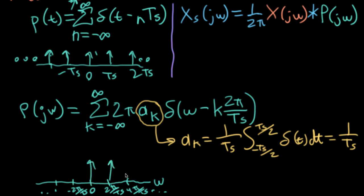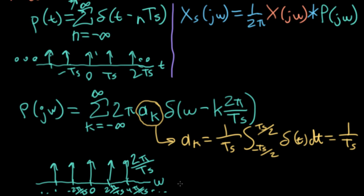So this is fairly remarkable. Up here we have a time domain function, and down here we have its Fourier transform, and they have the same form — they are both impulse trains. Remember from a few lectures ago, we saw that delta functions turned into constants and constants transformed into delta functions.